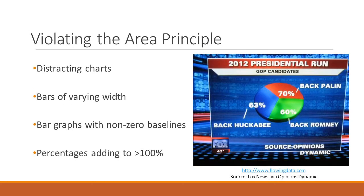Fox News often violates this principle by using poor charts that distract from their statistical findings. Common tricks involve making the baseline of a bar chart a number other than zero, or presenting a pie chart in which the percentages accrue to a number higher than 100, as seen in this clearly wrong opinion survey.